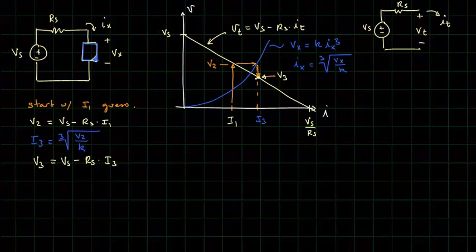And we continue. We project over to the nonlinear curve, and we get a current I4, where I4 will be equal to the cube root of V3 over K. And you can see we can continue this process. As long as we're going in the right direction, which happens to be clockwise in this case, we will converge. We will quickly converge, so it doesn't take too many iterations.